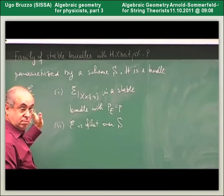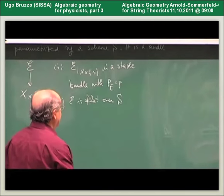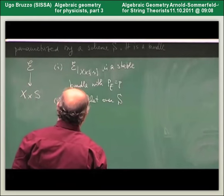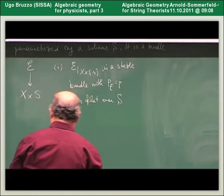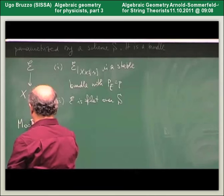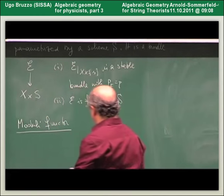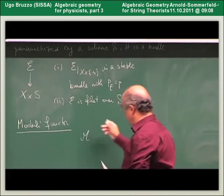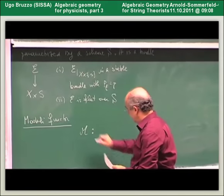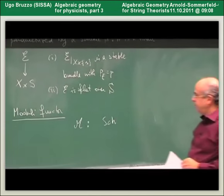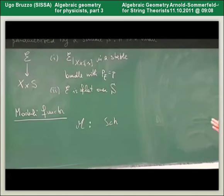This is our functor: to every S we associate these objects. On morphisms, it acts by pullback. So if we have a morphism from S to T, the family is pulled back from T to S — this is a contravariant functor. If we call F the map from S to T, we can consider the identity times F and pull back the family E.